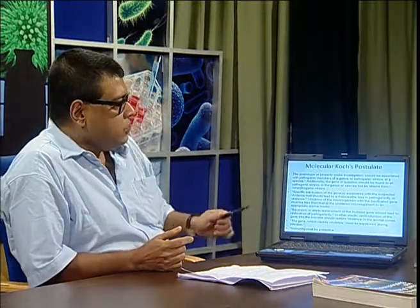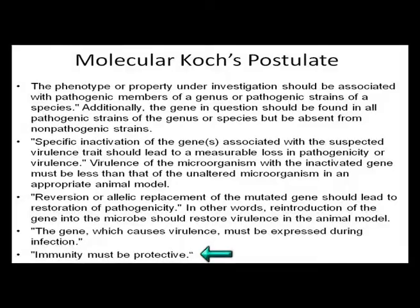These postulates mention that immunity is always protective, protecting not only plants but animals also from infection. But more importantly, it is whether that organism has the pathogenic gene or not. In the original Koch's postulate it was stated that for every disease there is a pathogen involved, but here the pathogen must have the virulent gene — and only if the virulent gene is present will infection take place, otherwise not.